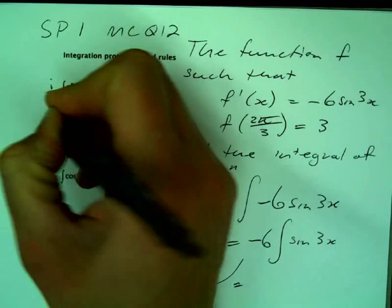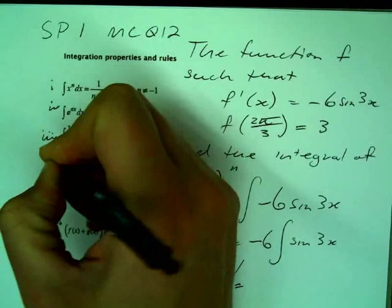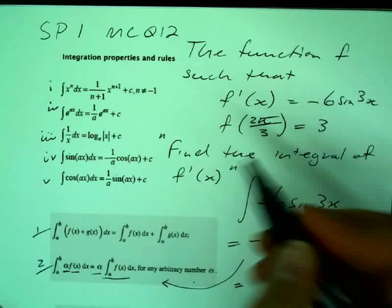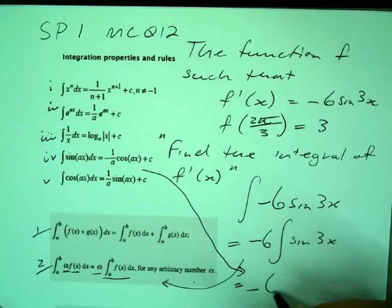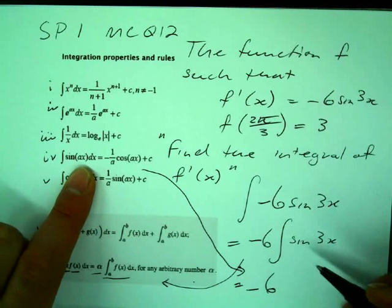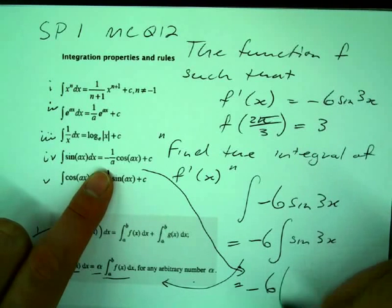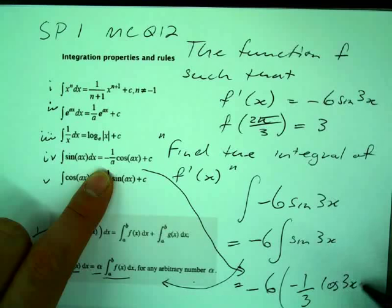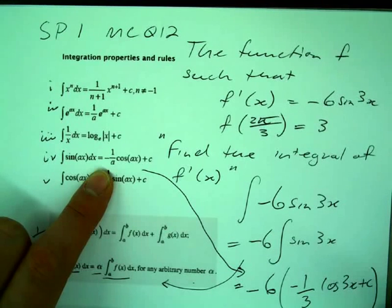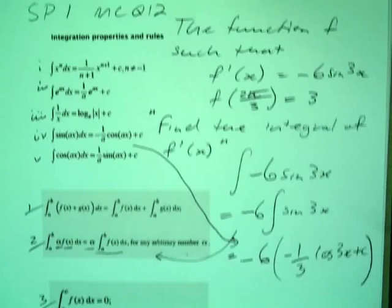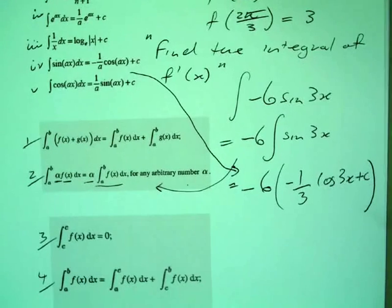Which one? 4? Yeah. So we still leave our negative 6 at the front. What's the a in our example? So the rule I'm going to use is minus 1 over what? a, where a is 3. Cos 3x plus c, yeah? Can you see how I've taken that general rule? Alright.